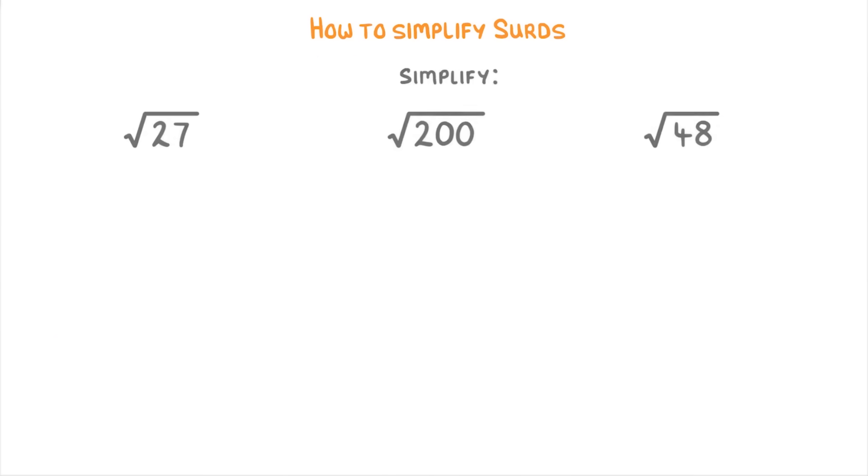Let's try the same thing for these surds. So for the square root of 27, we need to find a factor pair of 27 that contains a square number. And if you don't just know it off the top of your head, you can write out all the factor pairs: root 1 times root 27, and root 3 times root 9.